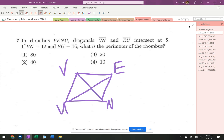I like to go clockwise. It says the diagonals intersect at S, so there's S, V, N. VN is 12, EU is 16. What's the perimeter? The Regents seems to be fixated lately.